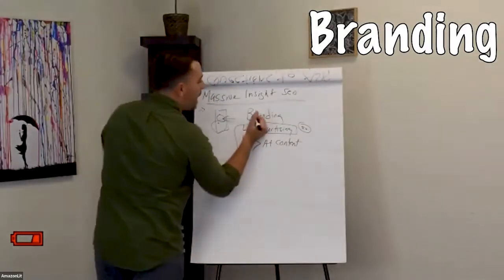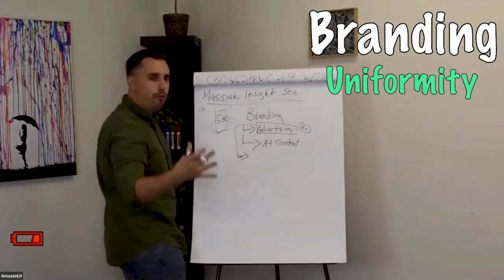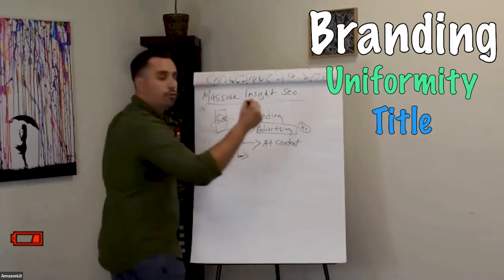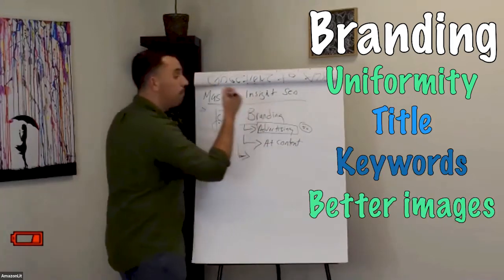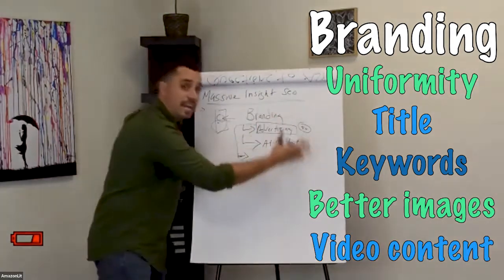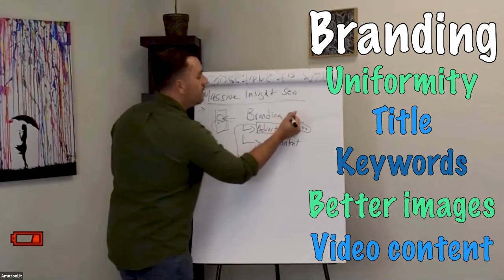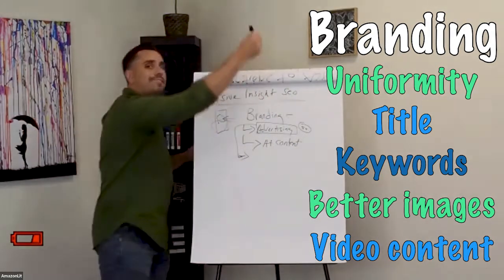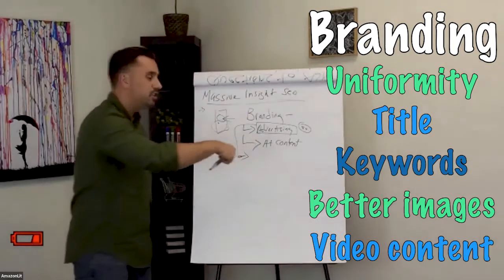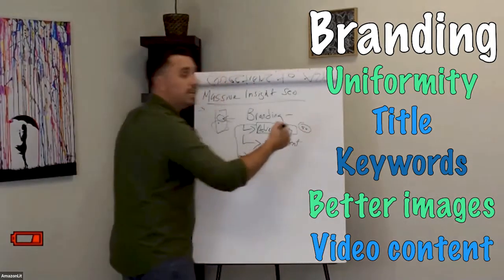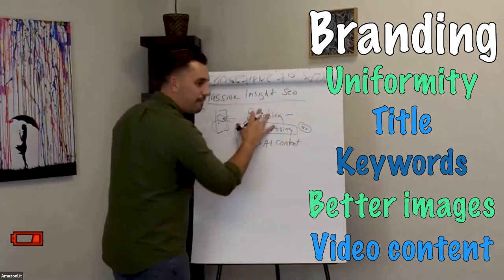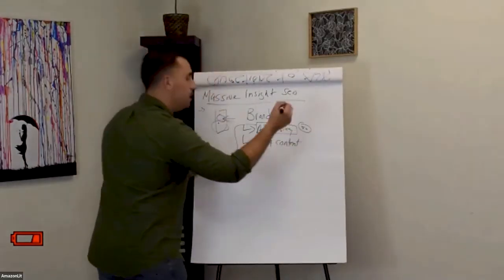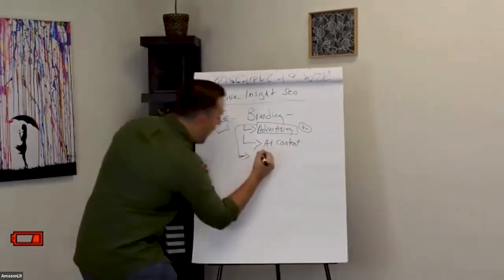So branding, which we talked about, which was uniformity through A-plus content, through title, through the keywords, through better images, through video content on their listings. This is how you're going to help them brand themselves on Amazon. By asking those questions that we previously just brought up, you get a better vision of theirs, and you're able to take that vision and bring it into their listings. Then you're going to talk about the A-plus content. You're going to talk about advertising. Afterwards, you're going to talk about fulfillment.